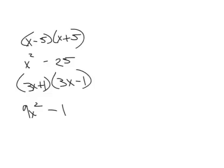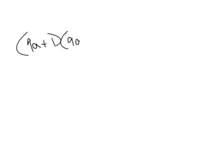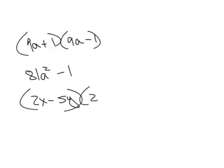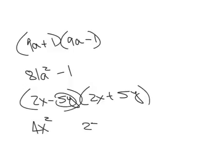Continuing with examples 11 through 15, let's look at example 13: 9a plus 1 times 9a minus 1. Square the first term to get 81a squared, square the second term to get 1, put a minus — you can do these in your head. Example 14: 2x minus 5y times 2x plus 5y. Square the first term to get 4x squared, square the second term to get 25y squared, put a minus there and you're done. That's it for 4.6 in elementary algebra.